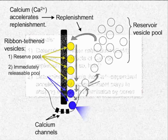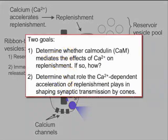In this study, we set out to determine whether the calcium signaling protein calmodulin is responsible for the calcium-dependent acceleration of replenishment, and if it is, we want to determine how that happens. Additionally, we sought to determine how that process plays a role in shaping synaptic transmission by cones.